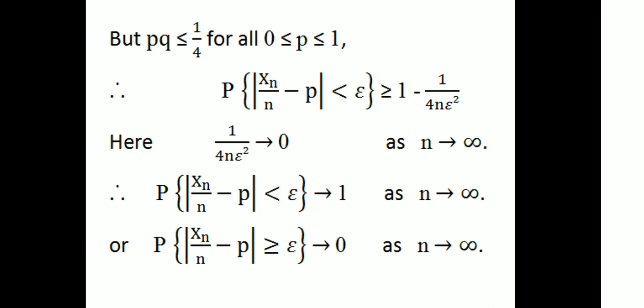Since pq is less than or equal to 1/4 for all 0 ≤ p ≤ 1, we have probability of |Xn/N minus p| less than epsilon greater than or equal to 1 minus 1/(4N epsilon squared). Then 1/(4N epsilon squared) tends to 0 as N tends to infinity. Therefore, probability of |Xn/N minus p| less than epsilon tends to 1 as N tends to infinity. This completes the proof of Bernoulli's Law of Large Numbers.